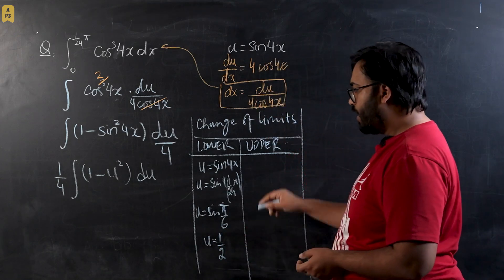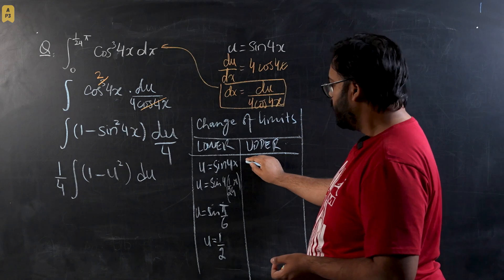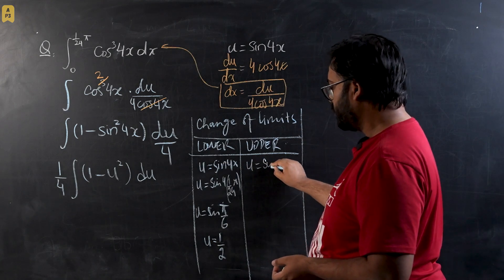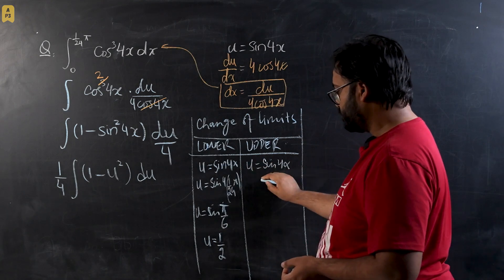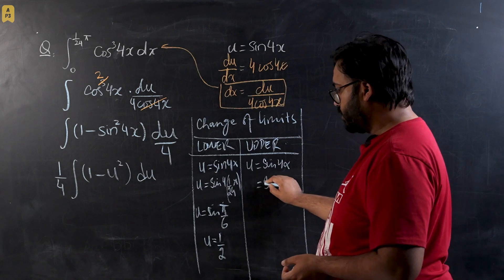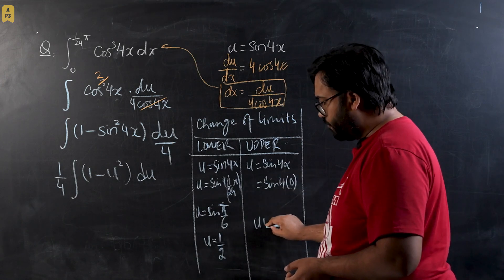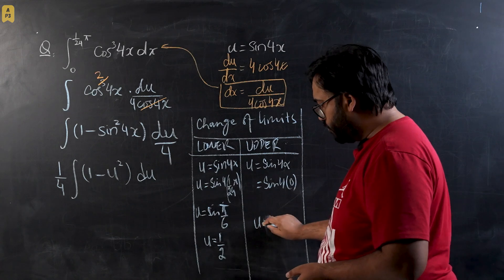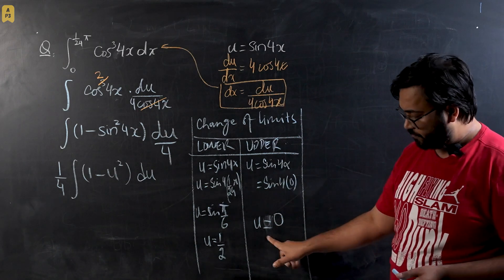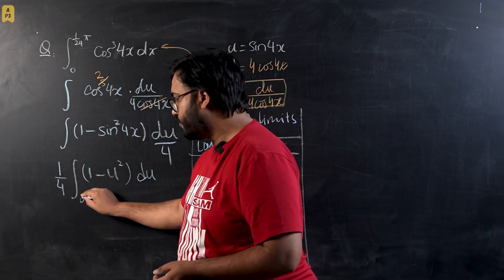And for lower limit we have 0, so u = sin 4x and we will write sin(4 × 0), that would give us the value for u that would be the lower limit, that is 0. So now we have two limits, so we're going to integrate it from 0 till 1/2.